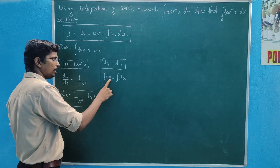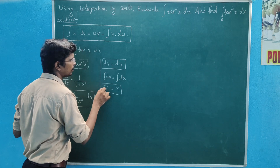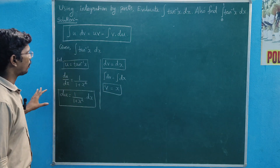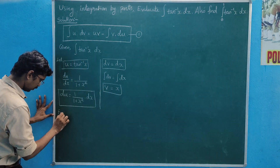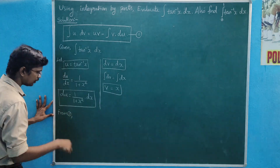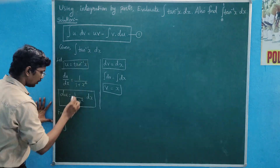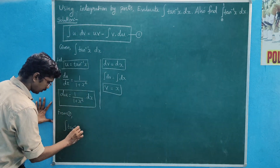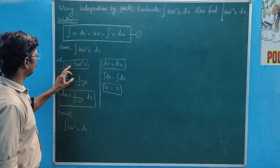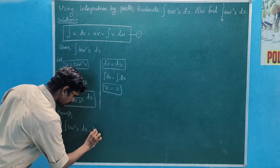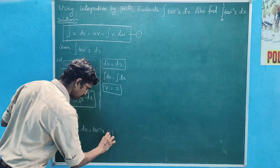The integral of 1 over x, v equal to x. Now we apply the integration by parts formula: integral of tan inverse of x dx equal to u times v, that is u into tan inverse of x.